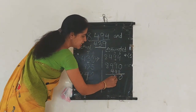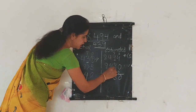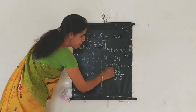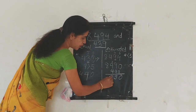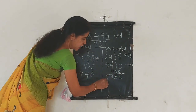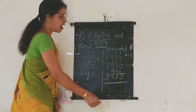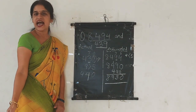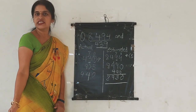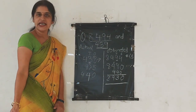Now let's add both estimated numbers: 8,490 plus 440. 0 plus 0 is 0; 9 plus 4 is 13, carry 1; 4 plus 4 plus 1 is 9; 8 plus 0 is 8. So your estimated sum is 8,930.